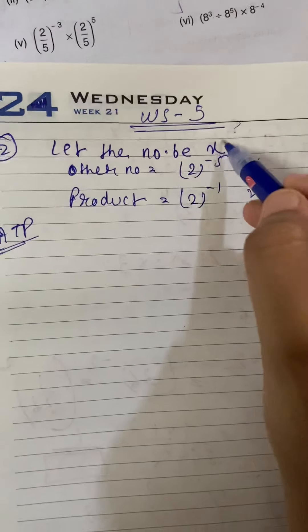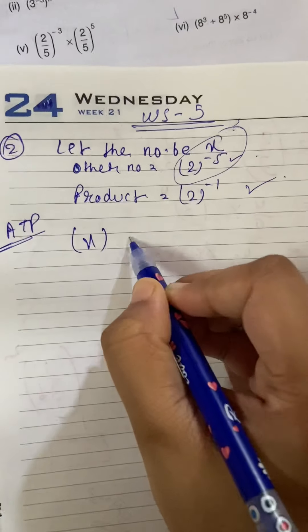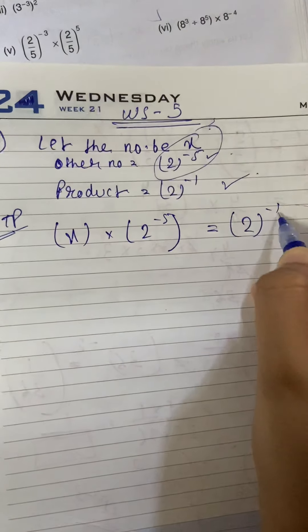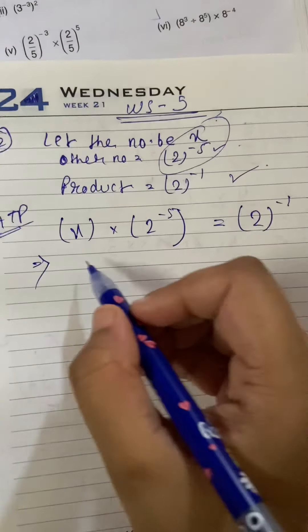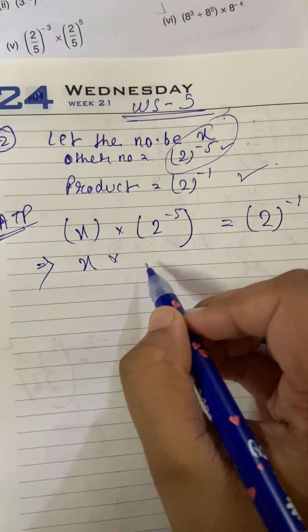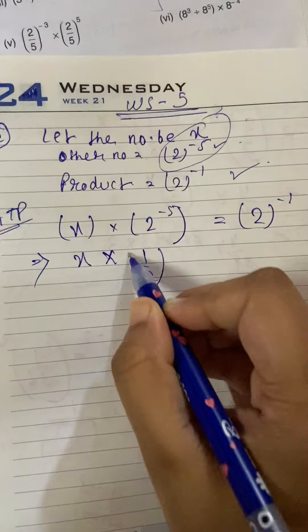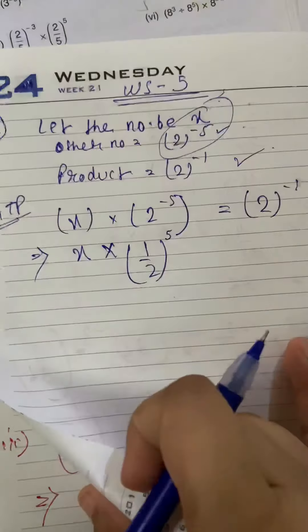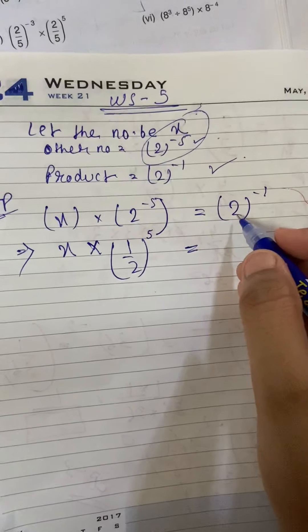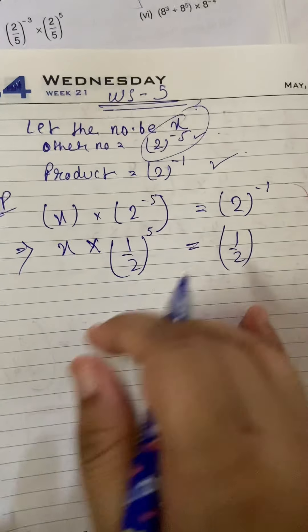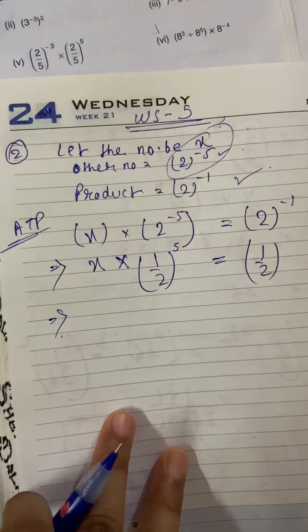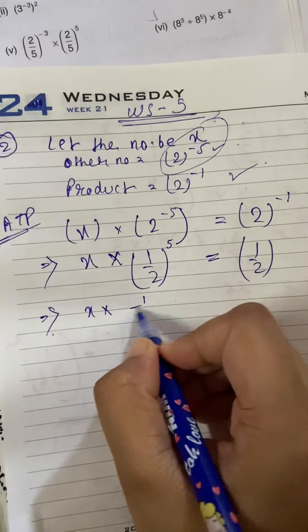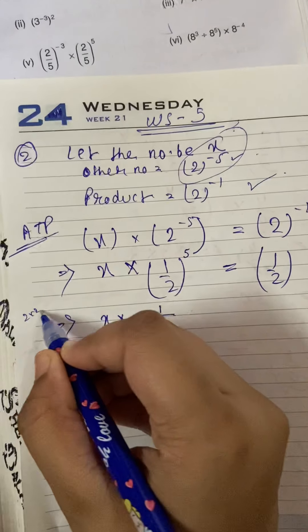According to problem, jub in dhoon ko multiply karenghe, iska matlab x into 2 to the power minus 5. To answer aega 2 to the power minus 1. Solve kya se karenghe isko? Sibse pahle minus sign eliminate karna ho ga. To minus sign eliminate karne ke liye 2 to the power 5 ho jayega. Aur yye 1 by half ho jayega. 2 will become 1 by 2.